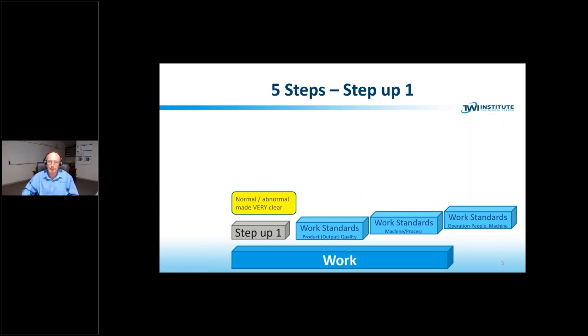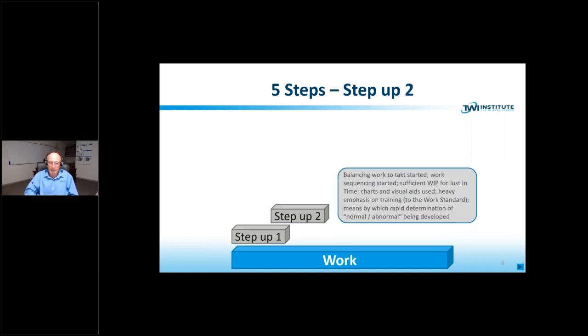An important point to note that work standards relating to a machine or person will always have a time component and this allows, sets the foundation for sequencing towards takt. This time component will have a standard time to do each element of the work. Once we have these work standards in place, we can determine normal abnormal. We can then do step up two, which is balancing work to takt has started. Work sequencing has started. Those two sort of coincide. Sufficient WIP for just in time is being developed. Charts and visual aids will be being used. There is heavy emphasis on training to the work standard and we're starting to develop a means by which rapid determination of normal abnormal is in place.